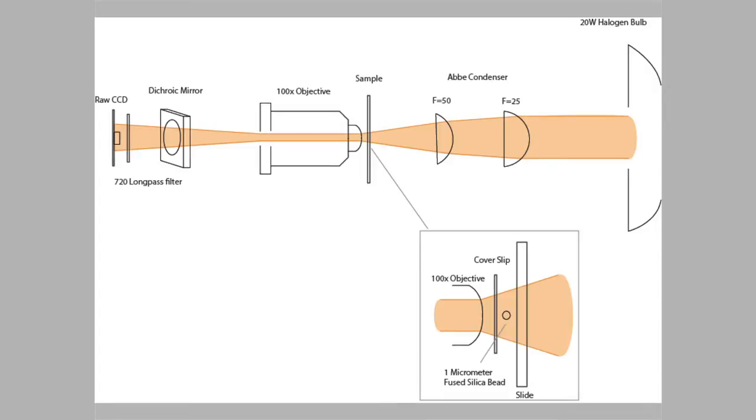This is the optical trap with no light sources on. You can see I have a 20 watt halogen bulb on the side. I have a few lenses that act as condensers. I have my sample. There is a microscope objective which does the most work in the system. A dichroic mirror which is a mirror that reflects certain wavelengths of light and allows other ones to pass through. And then a filter for filtering out red light. And a CCD which is just a fancy way to say camera.